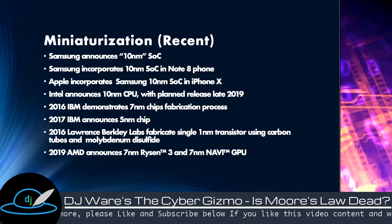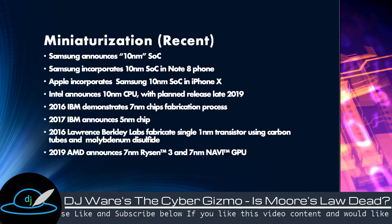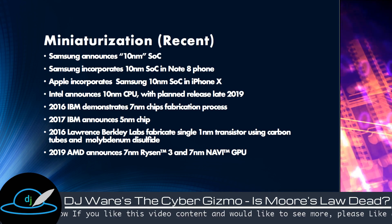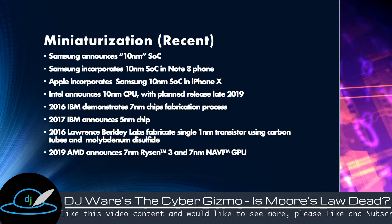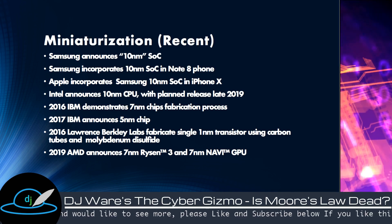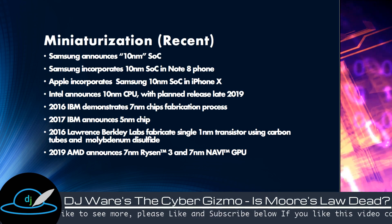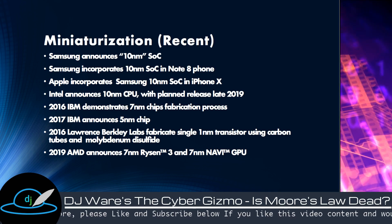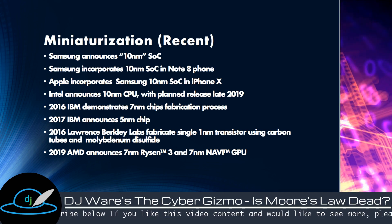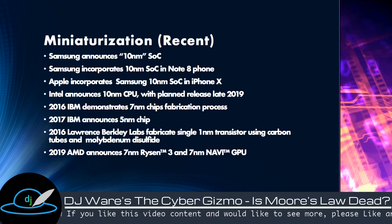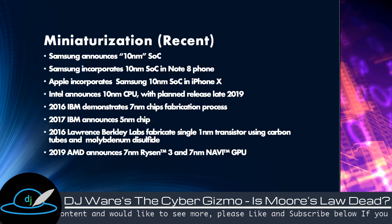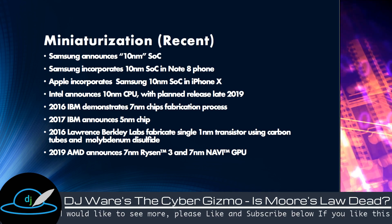We've had some advances in miniaturization. This slide is a little dated — Samsung is actually at 7 nanometer now, and so is Apple. Intel is about to release their 10 nanometer CPUs, and has already released them for the laptop. IBM demonstrated 7 nm fabrication as far back as 2016, and has also demonstrated a 5 nm fabrication. In 2016, Lawrence Berkeley Labs showed 1 nm transistors using carbon nanotubes and molybdenum disulfide. So we've got some runway — we know we can get more density out of the chip.